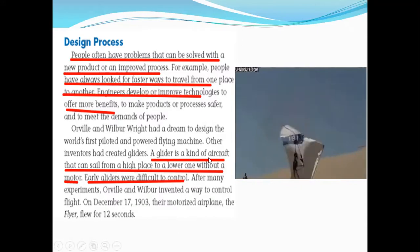Again, a glider is a kind of aircraft that can sail from high place to a lower one without motor. Early gliders were difficult to control. After many experiments, Orville and Wilbur invented a way to control flight. On December 17, 1903, there is motorized airplane. So, they helped us a lot.